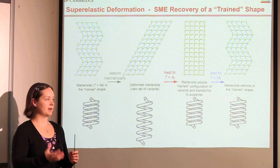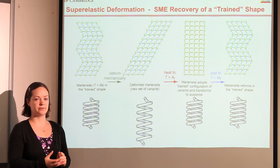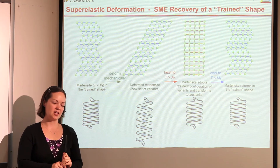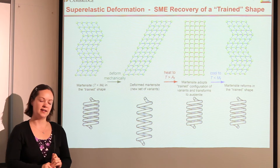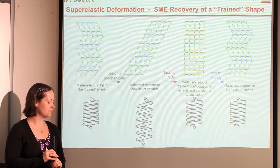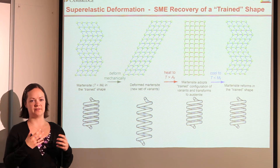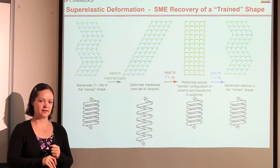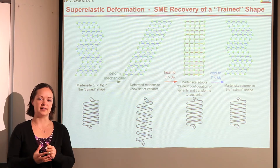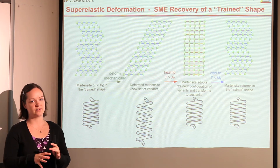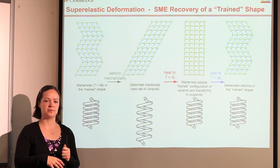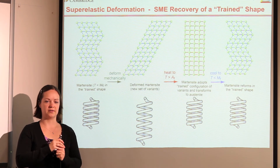We then cooled the spring back down again, and the austenite transforms back to martensite, and it stays in this trained shape. The trained shape is the shape in which the transformation occurs most readily, and is related to residual stresses that are set up in the material during the training process. When the spring was originally formed, the shape was constrained at a temperature well above the transformation temperature, held there for a few minutes and then quenched while still constraining the shape. This makes the material predisposed to adopt the same shape when the transformation occurs.